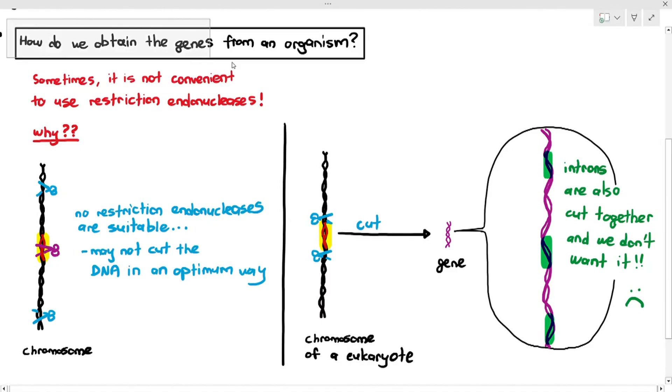Sometimes you may not be able to cut the chromosome optimally. Sometimes you will cut the chromosomes optimally and get the gene, but the gene has a lot of introns, and introns will interrupt your gene expression. So the question here is, how do we solve this problem then? I want a gene, but I also want the gene to not have introns.